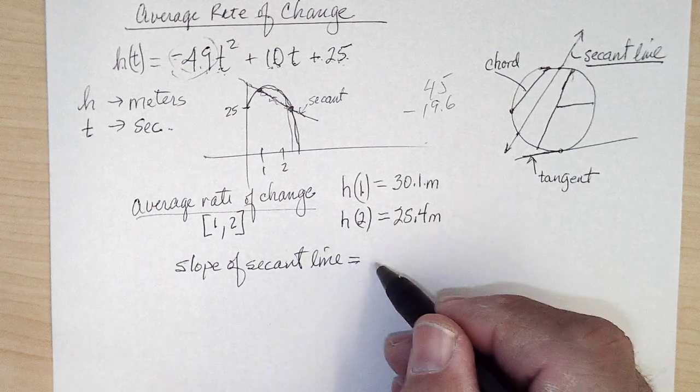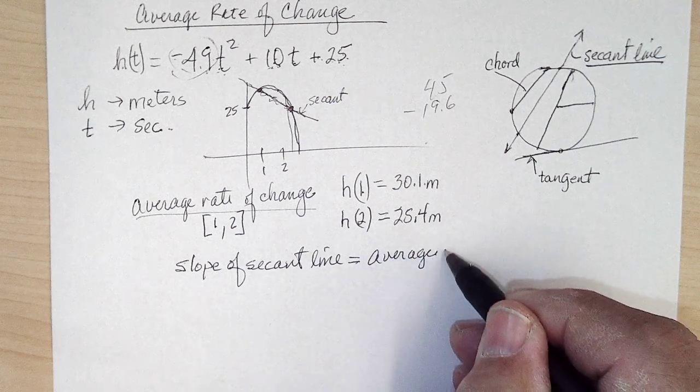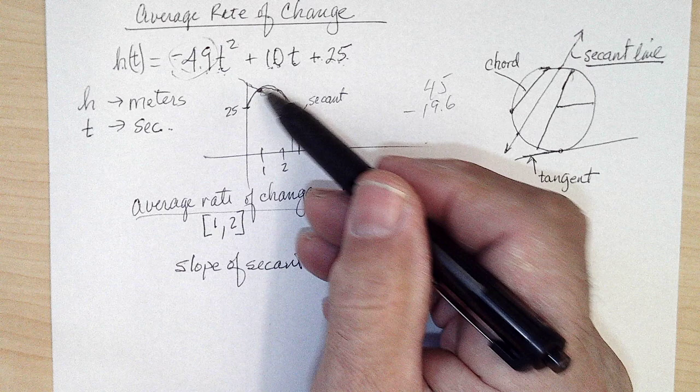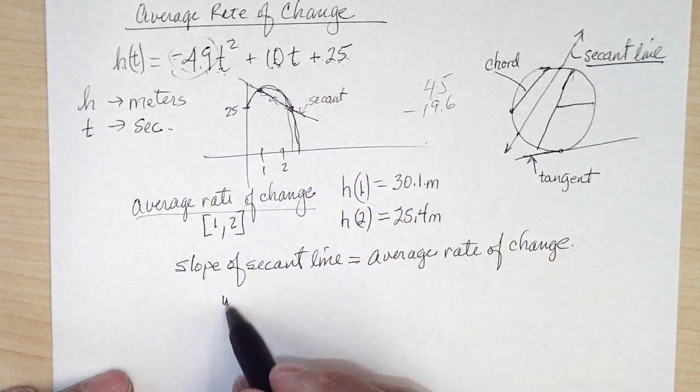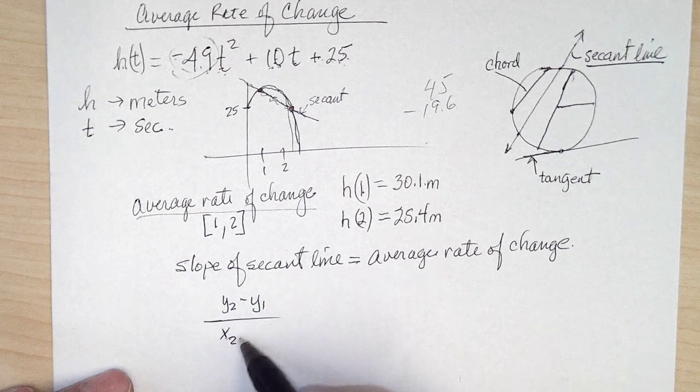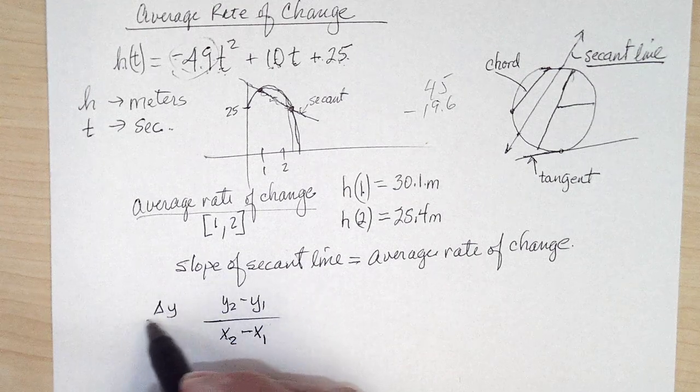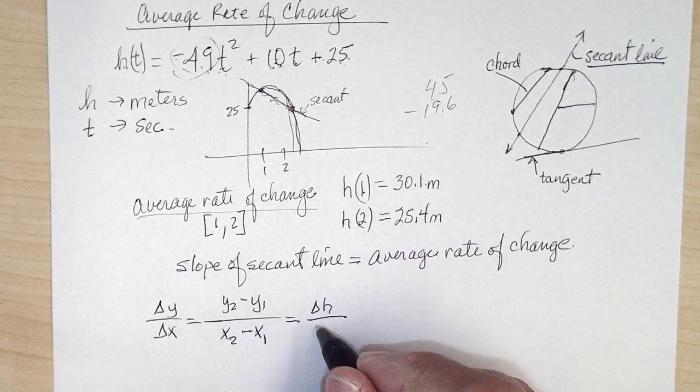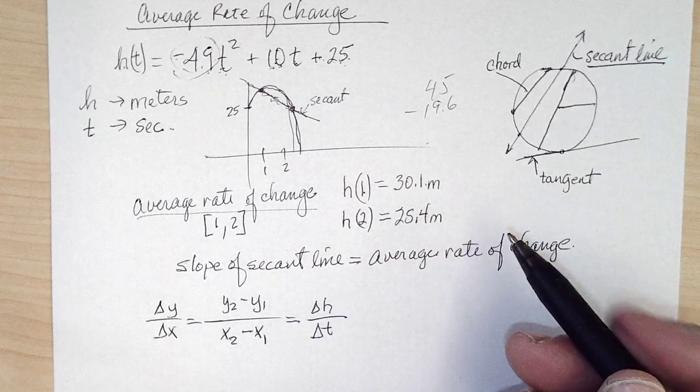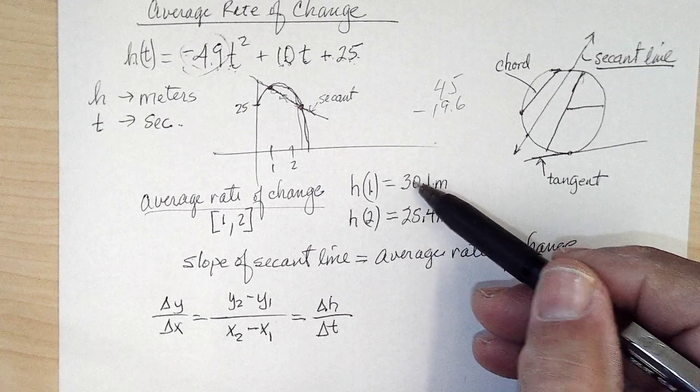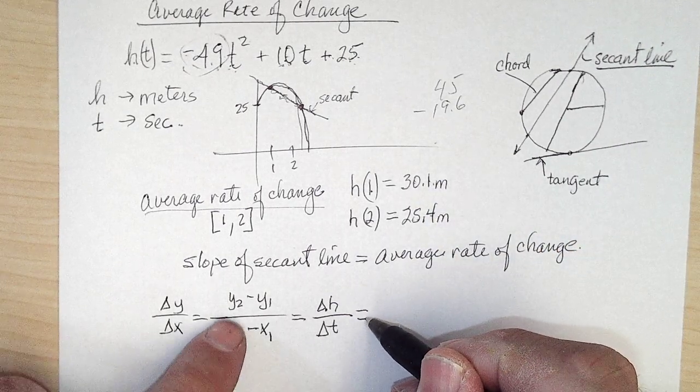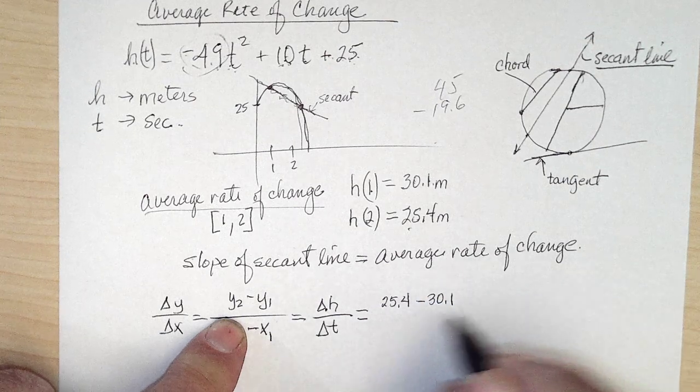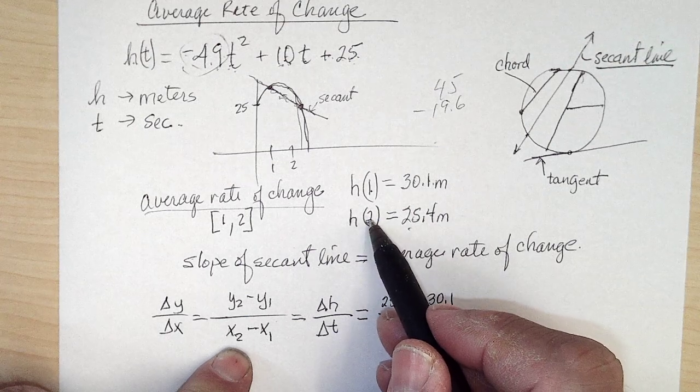The slope of the secant line is the average rate of change. So to find the slope between this point and that point, we're going to do y₂ minus y₁ over x₂ minus x₁, or change in y over change in x. However, in this problem, it would be the change in the height over the change in time. Now the change in the height—it went from 30.1 to 25.4, so we'd take y₂, 25.4 minus 30.1, over the change in time, 2 minus 1.